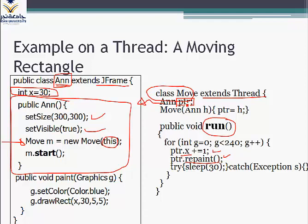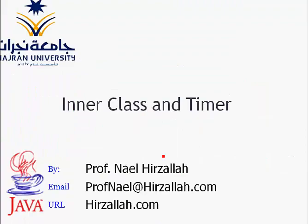We set this pointer during creation of the object — when we call 'new Move', we pass a pointer to this class and save it as ptr. Then when we want to call x or repaint, we use ptr. It sounds complicated, so let's look at a better way of doing it — using the inner class.